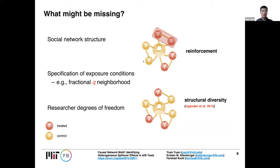The second point is how to choose proper parameters in the specification. For example, the fractional Q neighborhood approach asks researchers to specify Q — how to choose a proper Q is a question. The third point is that because researchers can choose whatever exposure mapping they like and even tune the parameters to present their data in the most favorable way, this might be a result of overfitting. So we also want to propose an approach that limits researcher degrees of freedom.